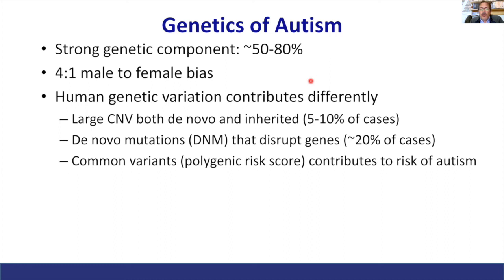Over the last decade there have been tremendous advances in understanding the classes of genetic variation important to this disorder. Early on, large copy number variants—big deletions and duplications, both inherited and sporadic—were found responsible for maybe 5 to 10% of cases. Later work from Mike Wiggler, our group, and Matt State showed that de novo mutations disrupting genes may account for an upper bound of about 20% of cases. Numerous studies by Ben Neal, Mark Daly, and others have shown the importance of common variants, particularly polygenic risk, contributing to perhaps all forms of autism at some level.